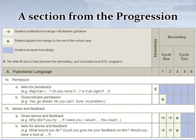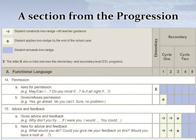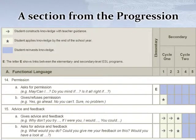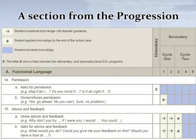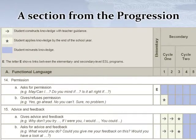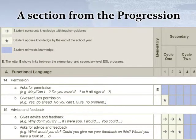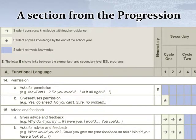Here's a section from the progression of learning. The knowledge is listed on the left, and the levels are on the right-hand side. For example, 14A — asks for permission. Students should be able to ask for permission by the end of grade six, which is why we have an E in the first column. Students should then reinvest this knowledge at the secondary level. Examples include: may I, can I, do you mind if, is it alright if. Students should be able to use at least one of these expressions in order to ask for permission.